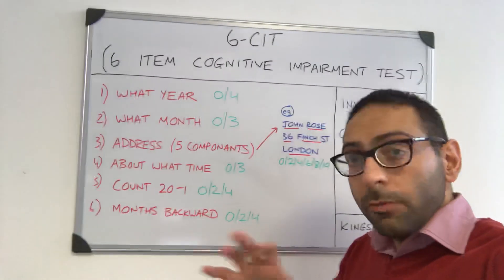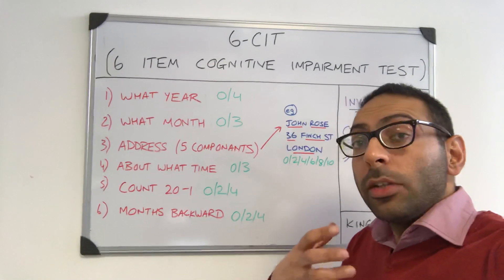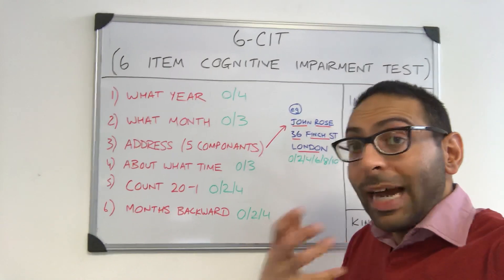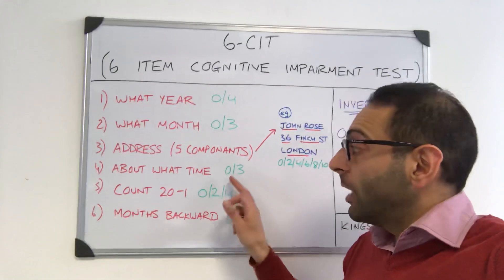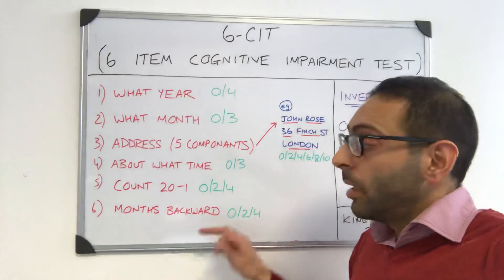Question four: what time roughly is it, to the nearest hour? If you get it right it's zero; if you get it wrong it's three.